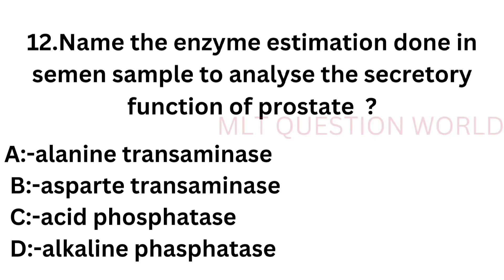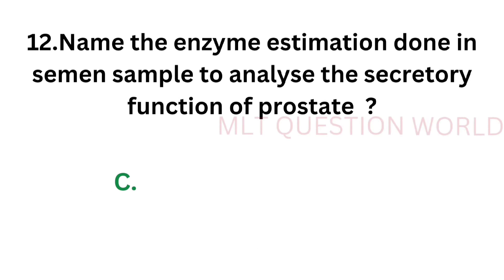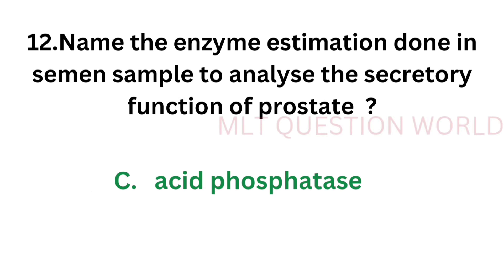Question number 12: Name the enzyme estimation done in semen sample to analyze the secretory function of the prostate. Option A: Alanine transaminase (ALT), option B: Aspartate transaminase (AST), option C: Acid phosphatase (ACP), option D: Alkaline phosphatase (ALP). The correct answer is option C, acid phosphatase. Acid phosphatase is the enzyme estimation done in semen sample to analyze the secretory function of the prostate.